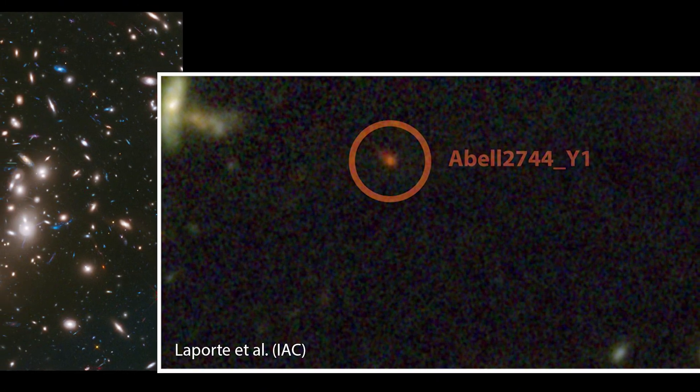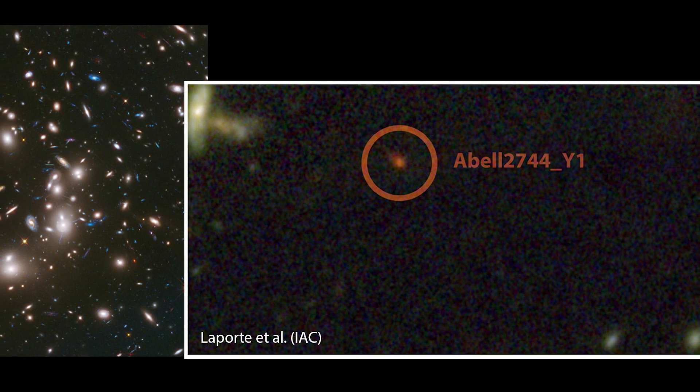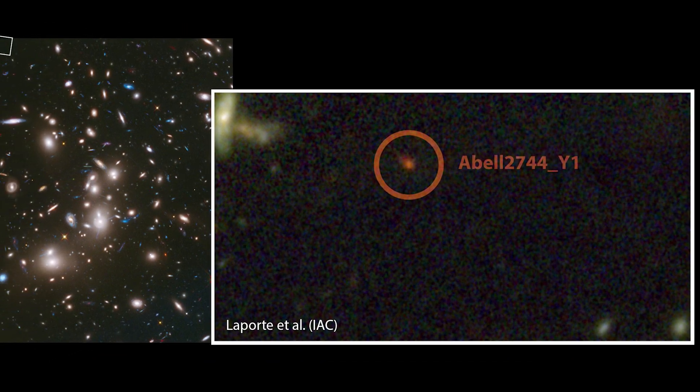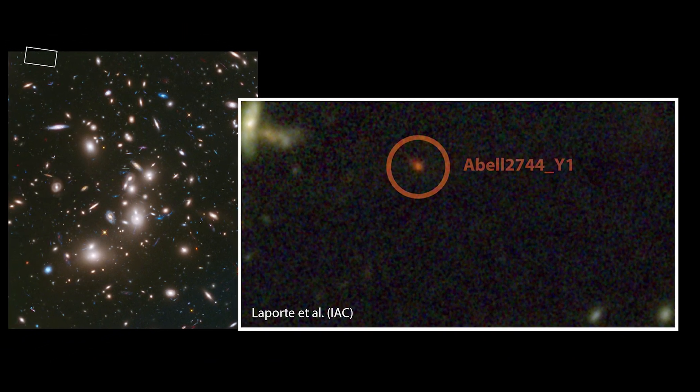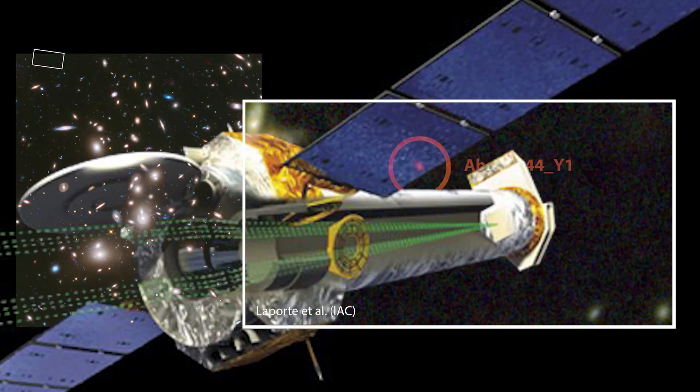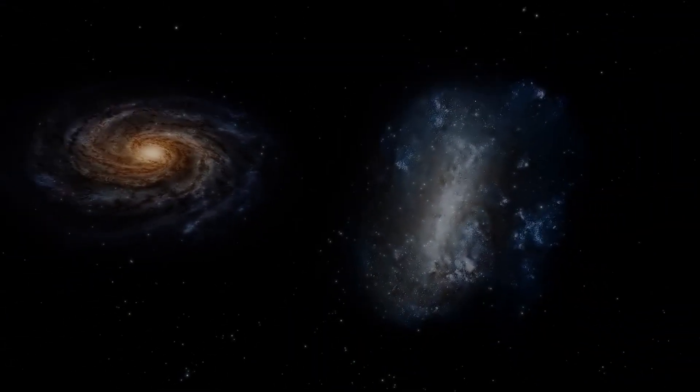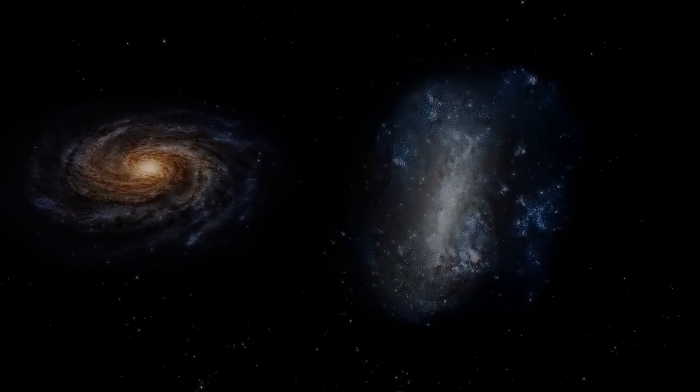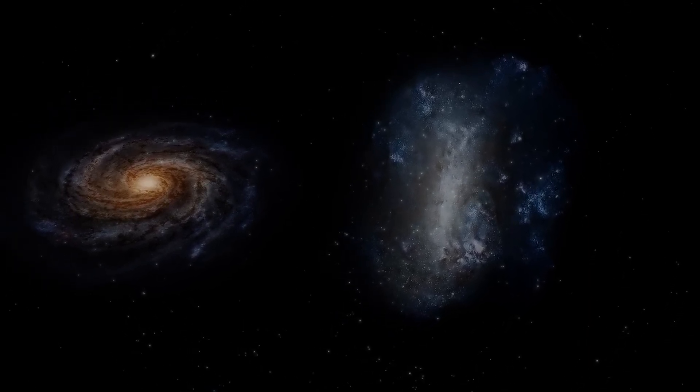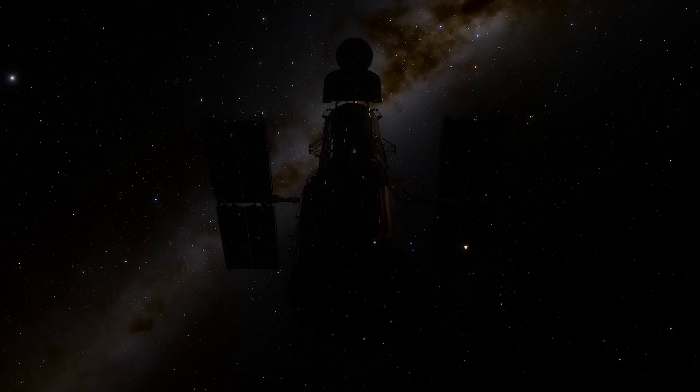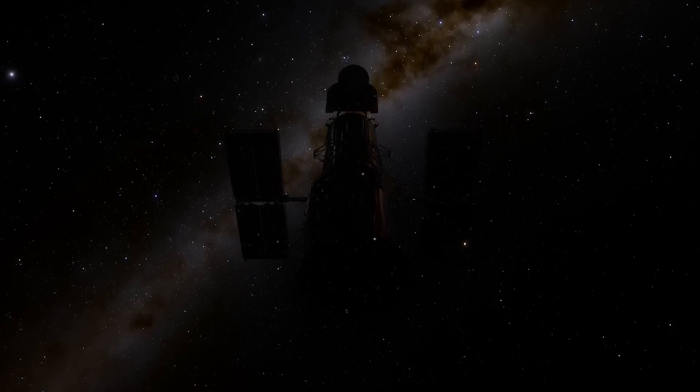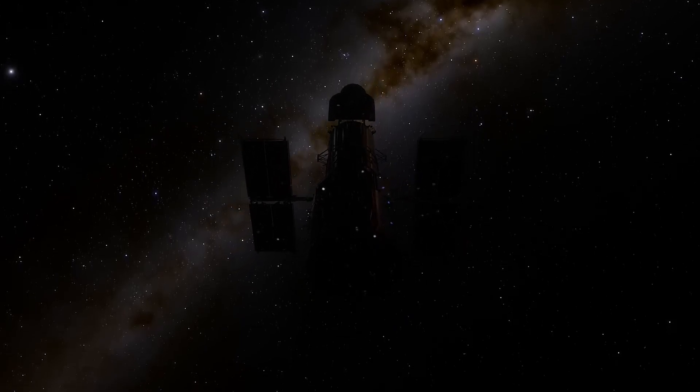Despite its immense distance, scientists have managed to capture the image of this amazing galaxy using a combination of three telescopes: Spitzer, Chandra, and Hubble. These telescopes work together to collect data from different wavelengths of light, which has allowed astronomers to observe galaxies that are up to 100 times more distant than would be possible with each observatory alone.